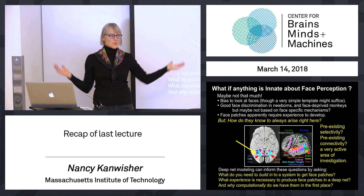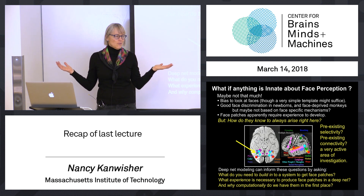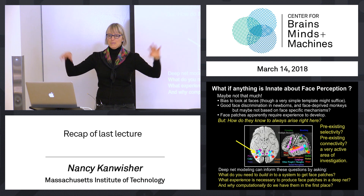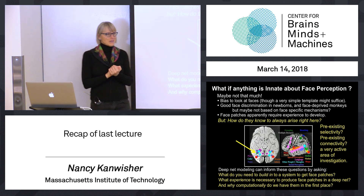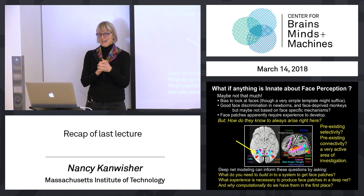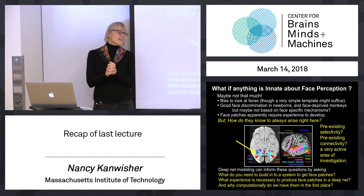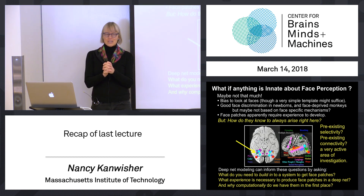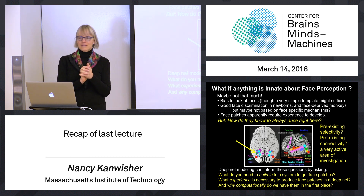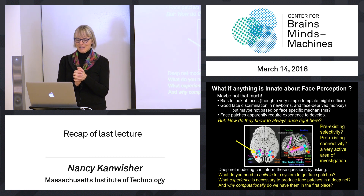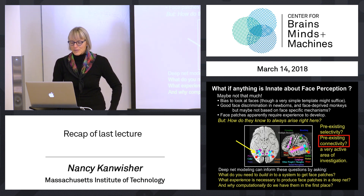At the top level, why computationally does it make sense to have face patches in the first place? This is the biggest question lurking in the background of the whole field. I'm describing all of these specialized mechanisms in mind and brain, but it would be nice to know why our minds and brains are organized that way rather than just that they are. That's a really hard question, but there's real hope that computational modeling may get us toward an answer sometime in the next decade, maybe even the next few years.